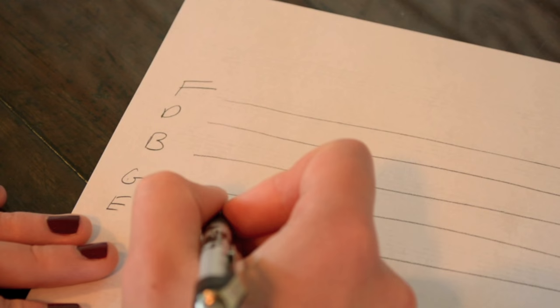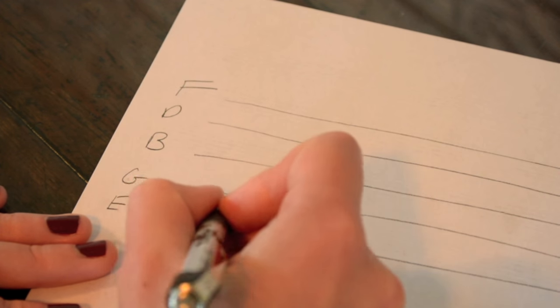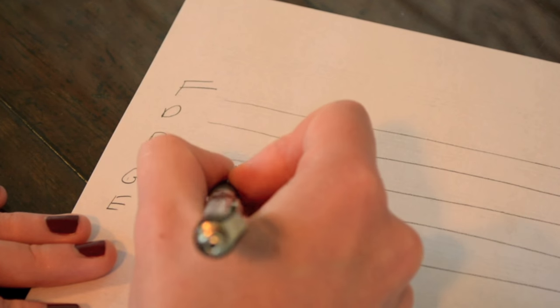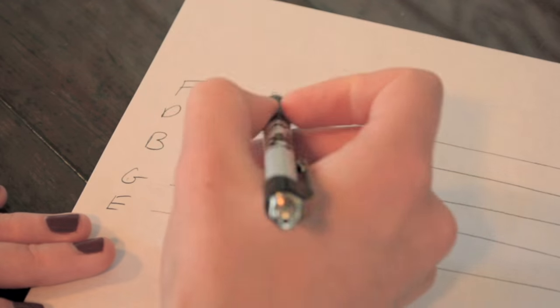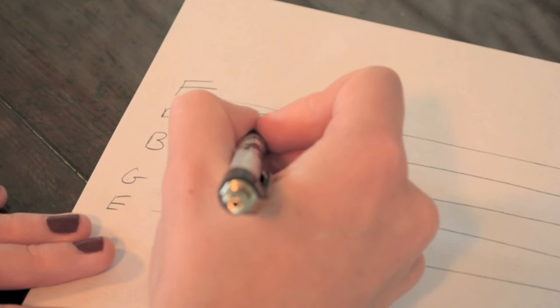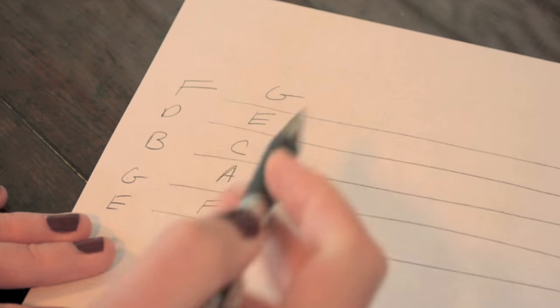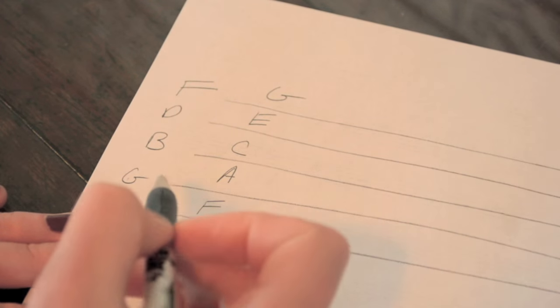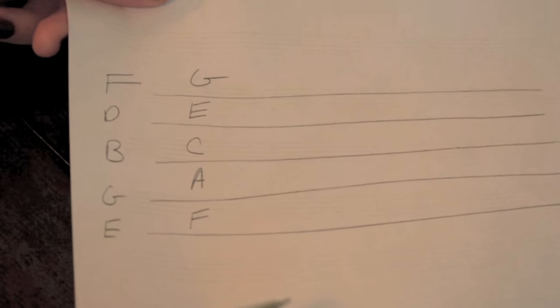And then, of course, the spaces are F, A, C, and then E, and then G. So these are lines and spaces. This is just the best way to help you memorize it.